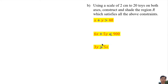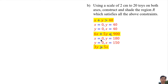The three lines must be drawn on the graph. We need at least 2 points to draw each line. For the first line: when x equals 0, y equals 40; when y equals 0, x equals 40. For the second line: when x is 0, y is 180; when y is 0, x is 150. For the third line: when x is 0, y is 0; when x is 30, y is 50.